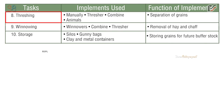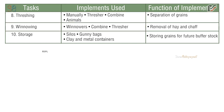Task 8 is threshing — manually, by thresher, or by animals — for separation of grains. Task 9 is winnowing — using winnowers or combine thresher — for removal of hay and chaff. Task 10 is storage — using silos, gunny bags, clay and metal containers — for storing grains for future buffer stock.